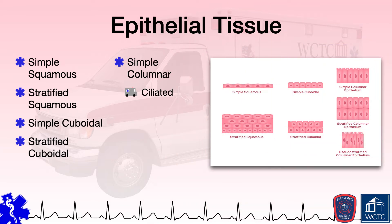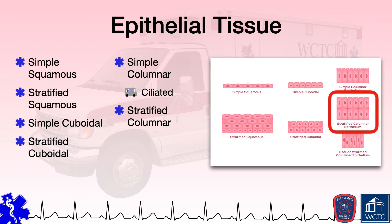There is also a stratified columnar epithelial tissue that has those thinner and longer cells stacked together into multiple layers for the purposes of protection and secretion. Such tissues exist in large ducts within some glands, part of the pharynx, and part of the male urethra.